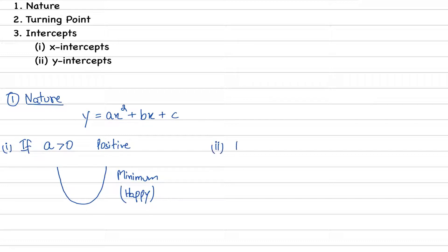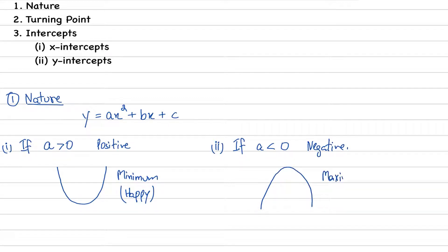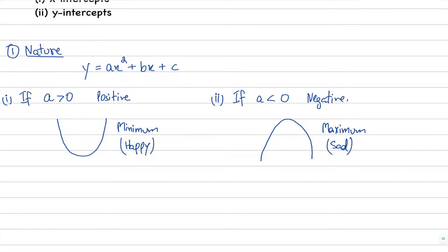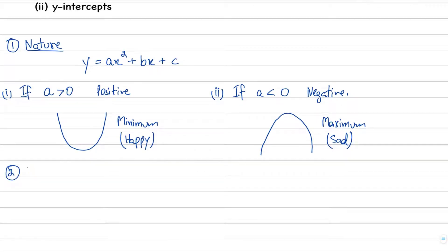Possibility number two is that if a is less than zero, that means it is negative. If it is negative, in that case we will have a maximum curve, or you can say we will have a sad face. So negative means maximum, or remember it as a sad face. That is number one — nature. Now moving to number two: how to find the turning point.